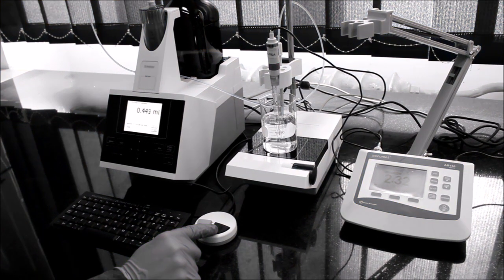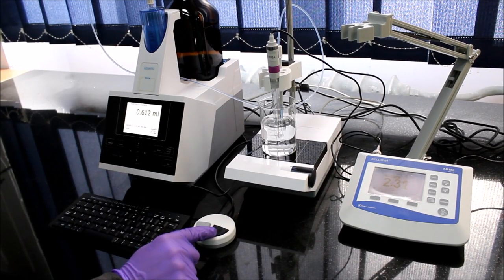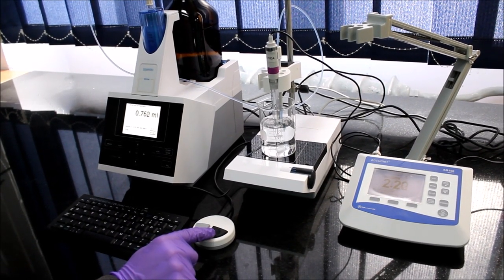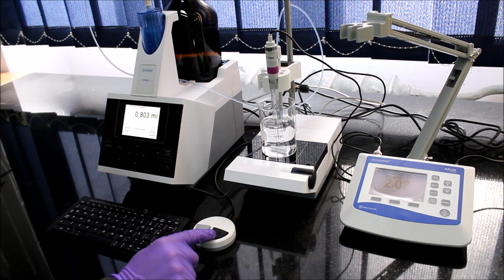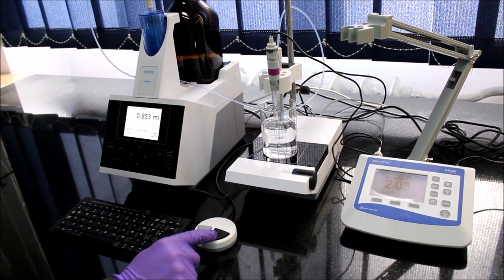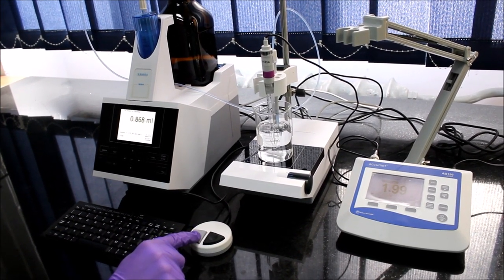In the real titration you should write down the volume of titrant solution added along with the corresponding pH meter reading to create a valid titration plot. As you can see, the pH of the solution is decreasing. When there is no more significant change in pH of the solution, we can stop the titration.